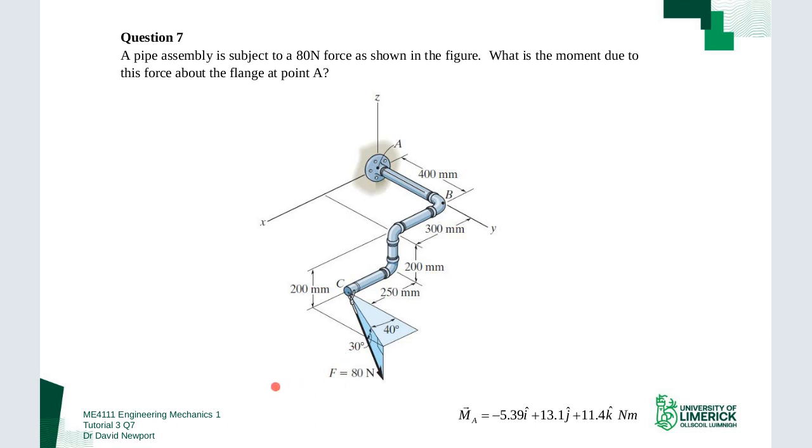In question 7 we have a pipe assembly which is subjected to an 80 newton force which is coming off at an angle as we can see here. I'm given some info on the angle, it's given 30 degrees here with the xy plane and then that is tilted off at 40 degrees.